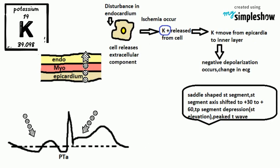Key points to diagnose pericarditis in ECG: One, the classic presentation is saddle-shaped ST segment elevation. The ST segment axis is shifted to plus 30 to plus 60 degrees. Two, diastolic injury current leads to TP segment depression, which manifests in the ECG as J point elevation. Three, due to repolarization abnormality in the early phase of pericarditis, the T wave becomes taller and peaked.